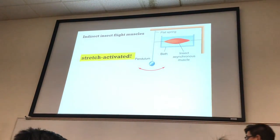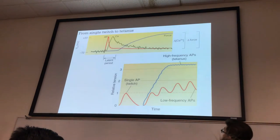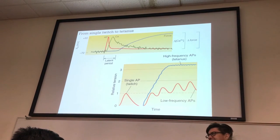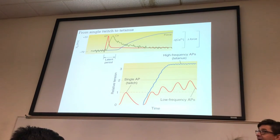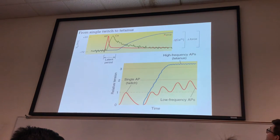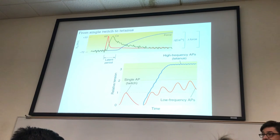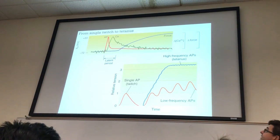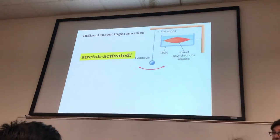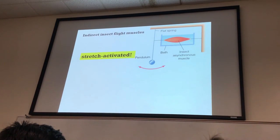We end up seeing muscles that actually contract so fast that if they relied upon an action potential, they would reach tetanus. But they don't, because they're not dependent upon an action potential — it's not a one-to-one ratio of one action potential to one muscle contraction. These are known as indirect flight muscles, and we see these in insects that have extremely fast wing beats.